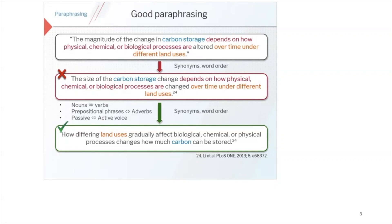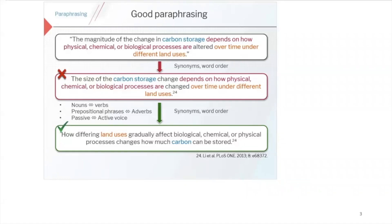A better paraphrase reads: 'How differing land use gradually affects biological, chemical, or physical processes changes how much carbon can be stored.' In this example, nouns are switched to verbs, prepositional phrases to adverbs, and the passive voice is switched to the active voice, as well as changing synonyms and word order. What you're aiming for is effective paraphrasing — changing word order and synonyms, but also changing the voice and style of your writing. It's a skill that you'll gain as you get more experience.